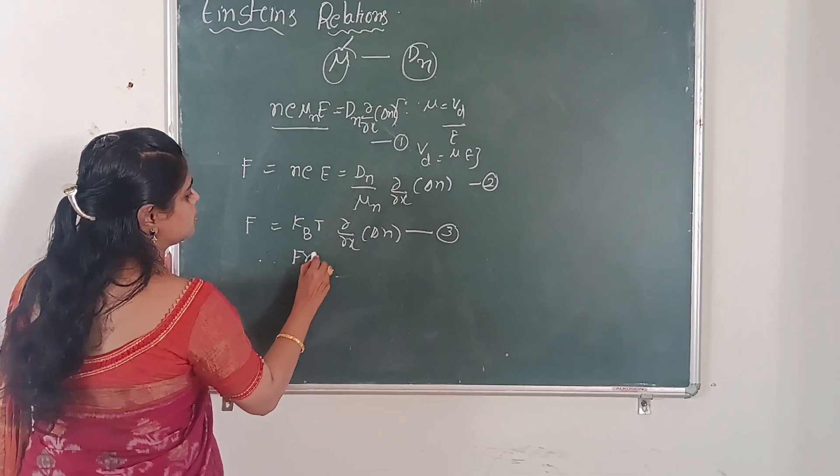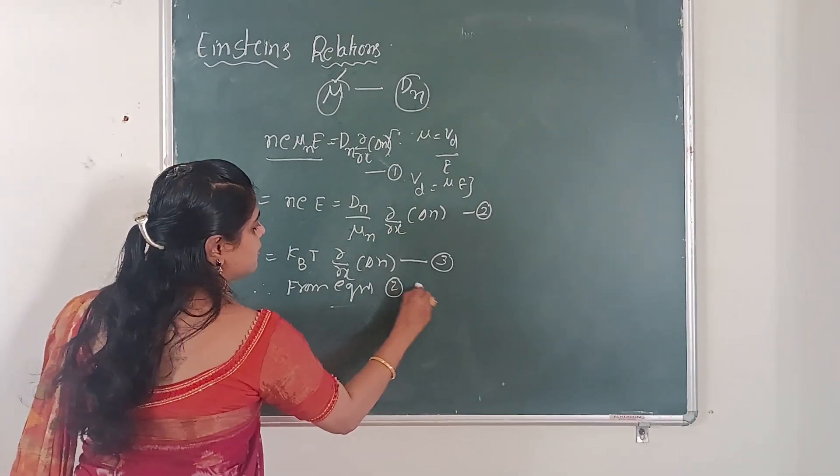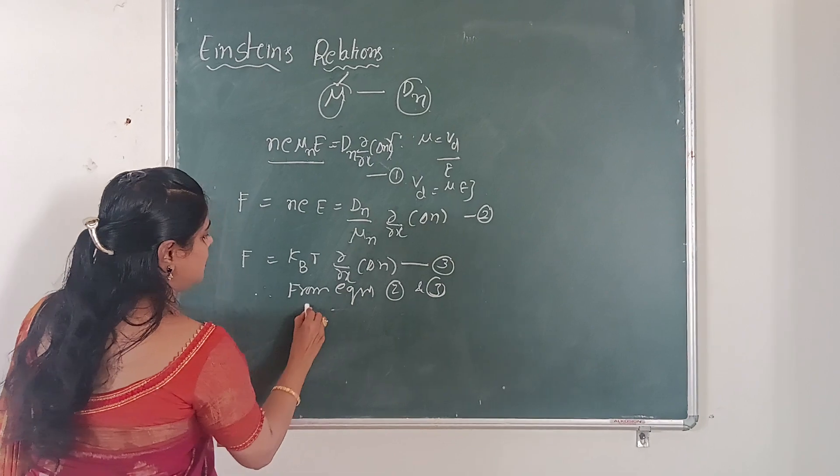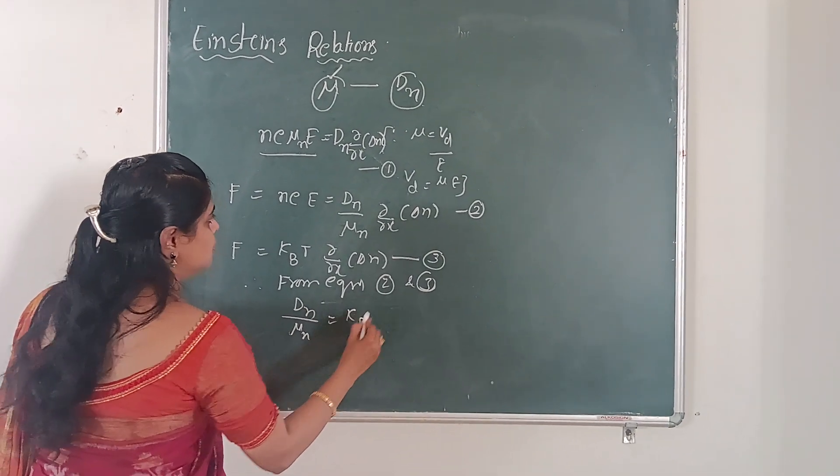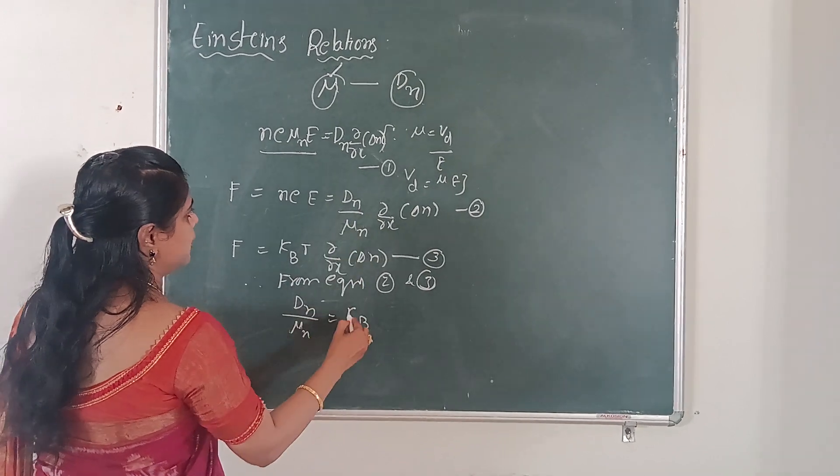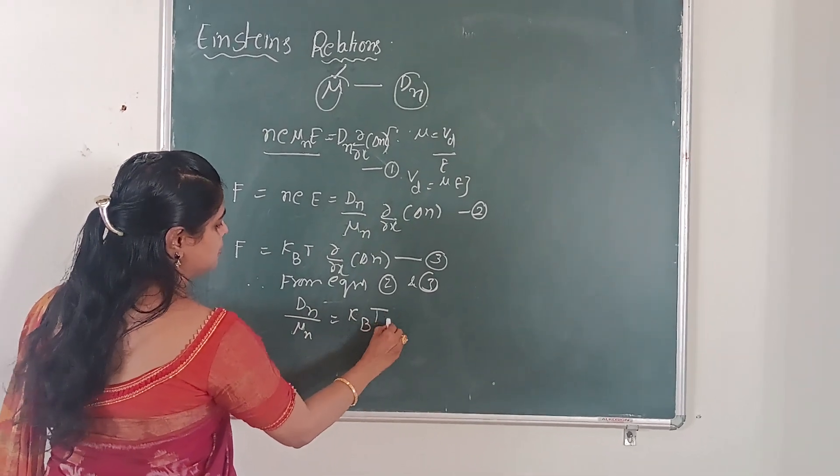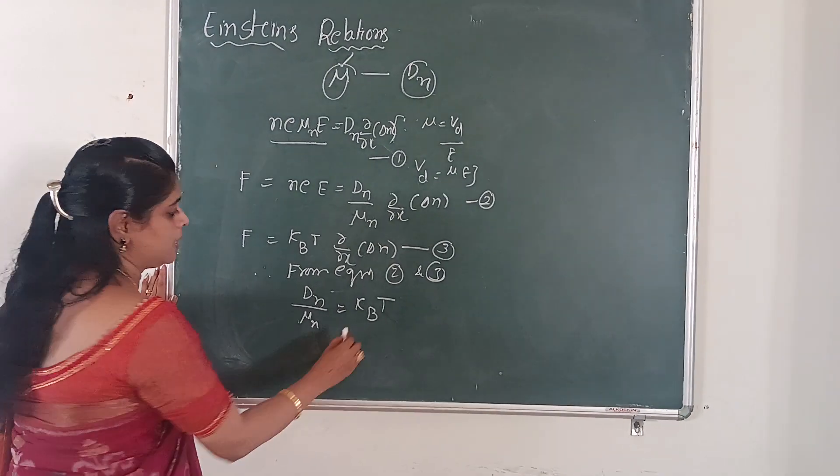Therefore, from equations 2 and 3, dn by mu n equals to KB T.